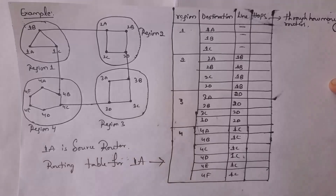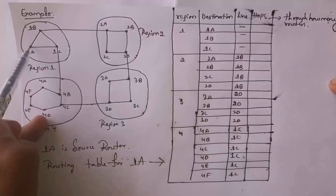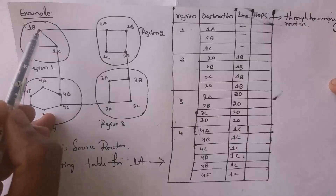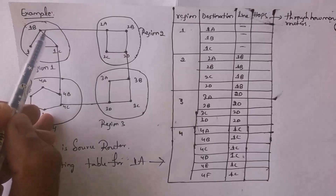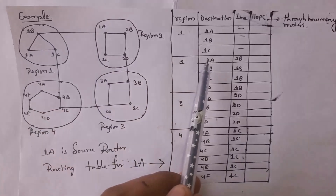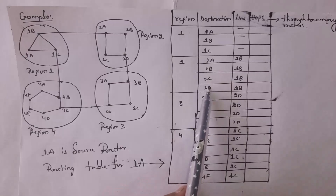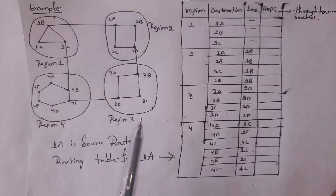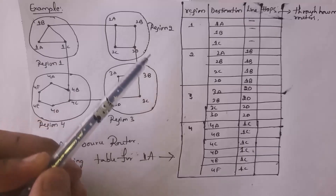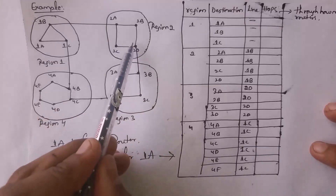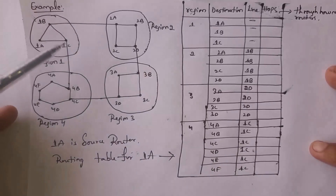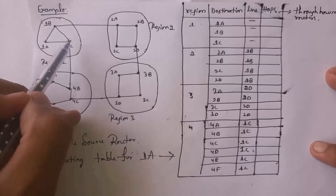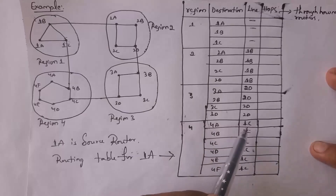For region 2, if router 1A wants to communicate to routers 2A, 2B, 2C, or 2D, it communicates by using gateway router 1B, because 1B is connected to region 2. For region 3, routers communicate via gateway router 2D. For region 4, router 1A communicates via gateway router 1C, since 1C is connected to region 4.